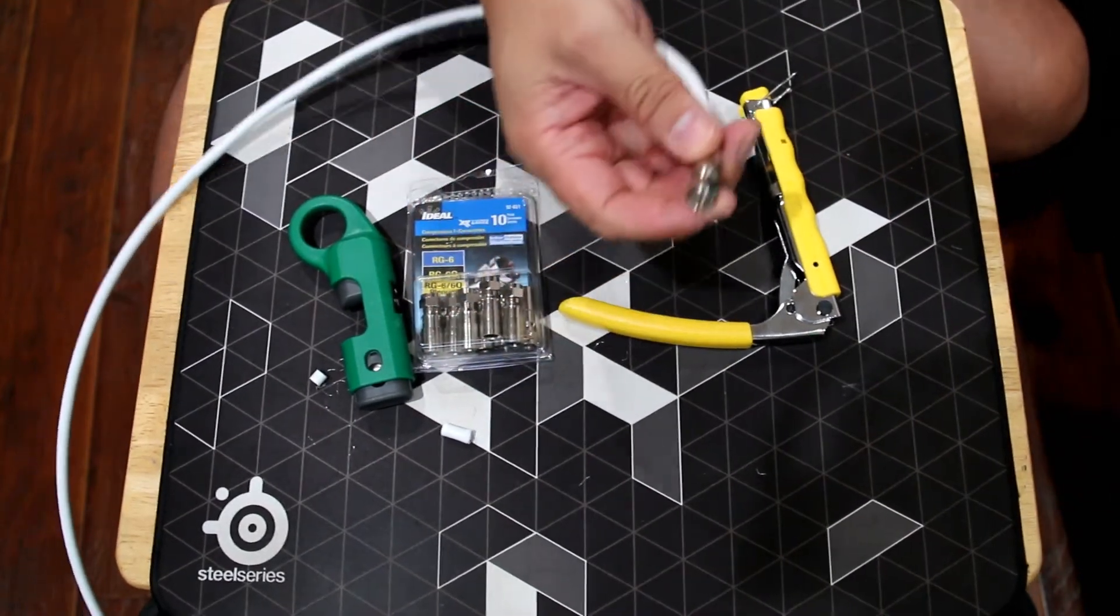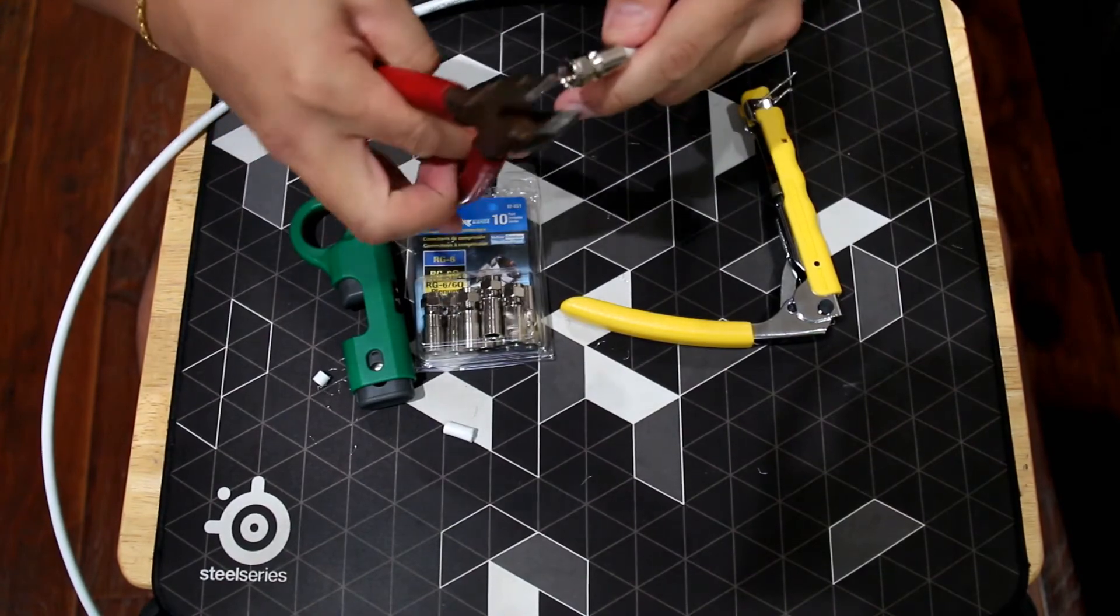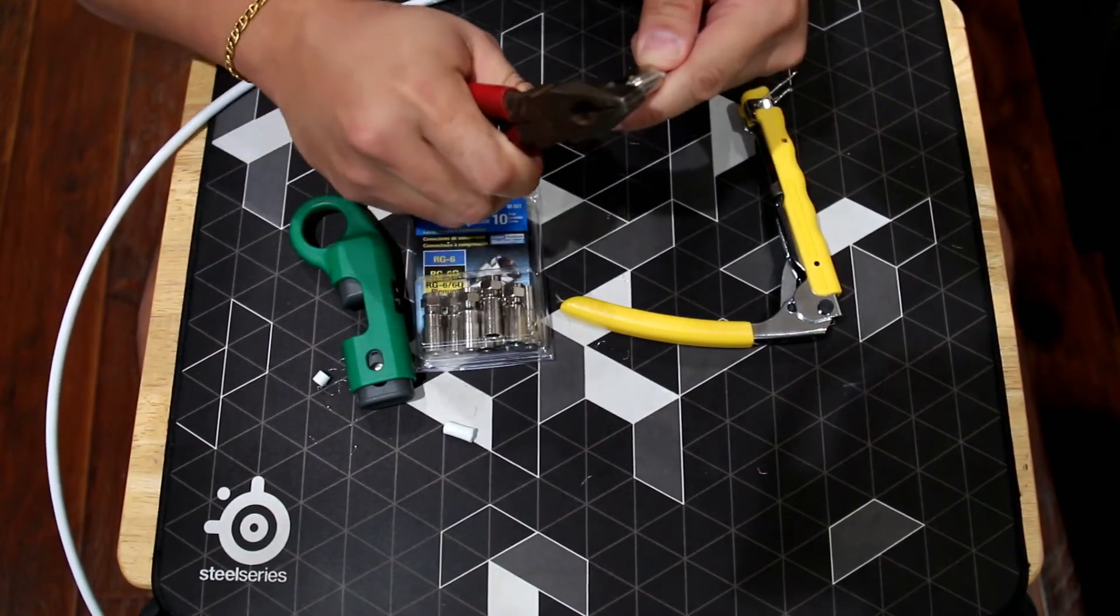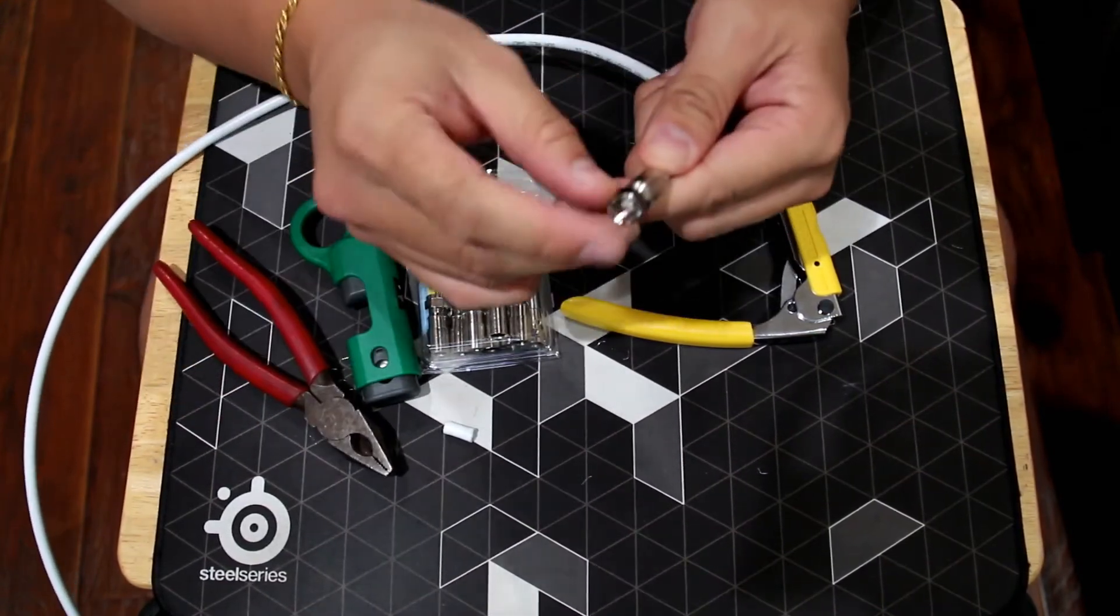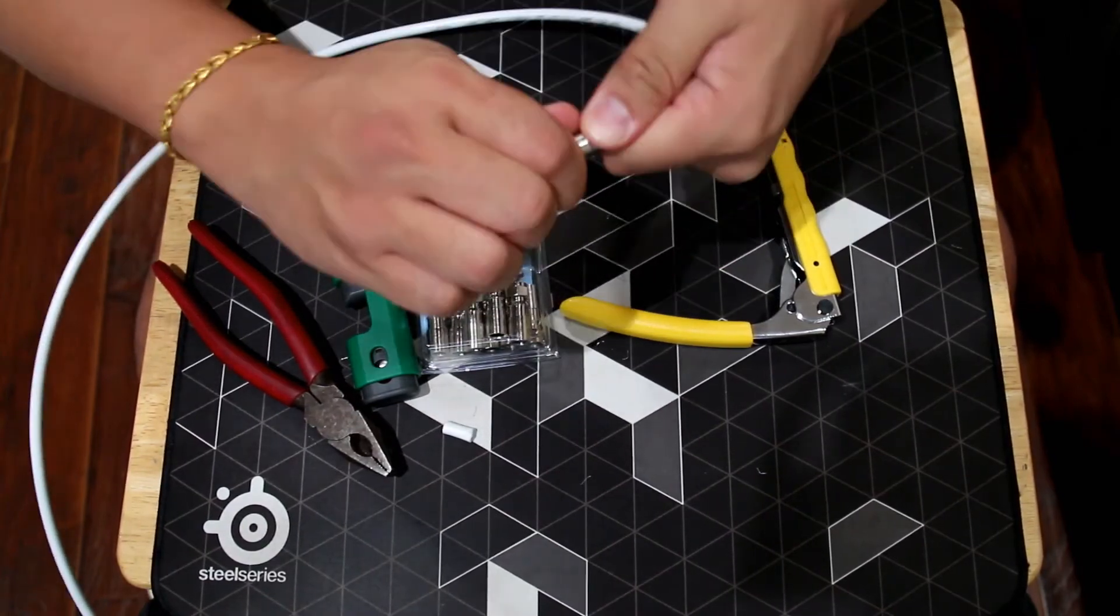Next, you're going to grab your wire cutter, trim off that piece like so. And then there you go. And then you have a finished product.